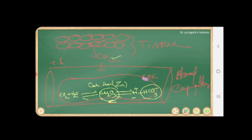This bicarbonate ion (HCO3⁻) then comes out from the RBC. Since the RBC is impermeable to different charges, the bicarbonate ion exits through a transporter protein known as the Band 3 transporter. With the help of the Band 3 transporter, bicarbonate ions move out from the RBC into the plasma.